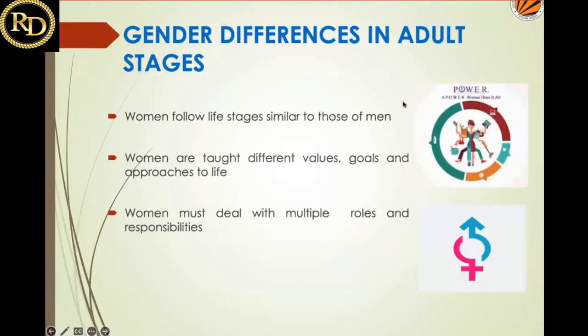In India, women follow life states similar to men but are still taught different values and goals. In many families, women eat after the whole family has finished eating. Women deal with multiple roles — taking care of family, children, and work simultaneously. Depending on these factors, the dietary pattern differs between males and females.